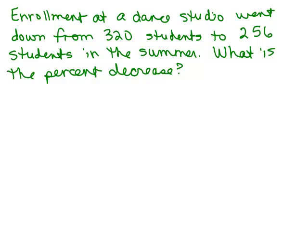Here's the next problem. Why don't you put the video on pause and try this on your own first. Enrollment at a dance studio went down from 320 students to 256 students in the summer. What is the percent decrease? So the number of students decreased. We're looking for our percent decrease. Our original amount is what always goes in the denominator. That's 320, that's how many students we had originally.